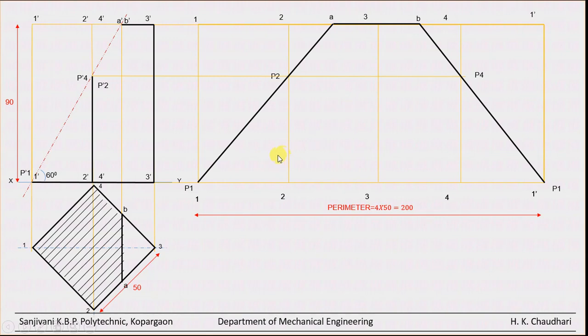So we have to just complete the edges. So these edges remain as it is. So draw the baseline and the vertical edges. Here we have completed the development of the given prism. So I hope you understood this problem. Thank you.